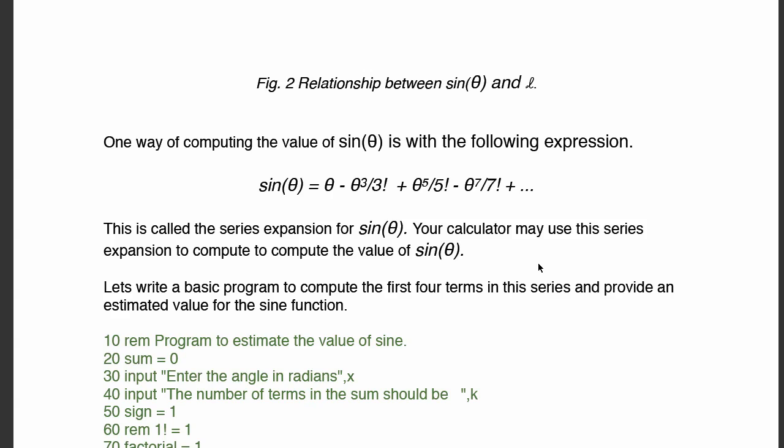So this is a basic program that does that. Notice we're going to take advantage of certain characteristics of this series. One is that all the powers of theta that appear are odd powers — theta to the seventh, theta to the fifth, theta cubed, and theta to the first power. All the powers of theta in this series are odd powers, and all the factorials are odd terms: 3 factorial, 5 factorial, 7 factorial, and so on. We can use that to help us write the program.